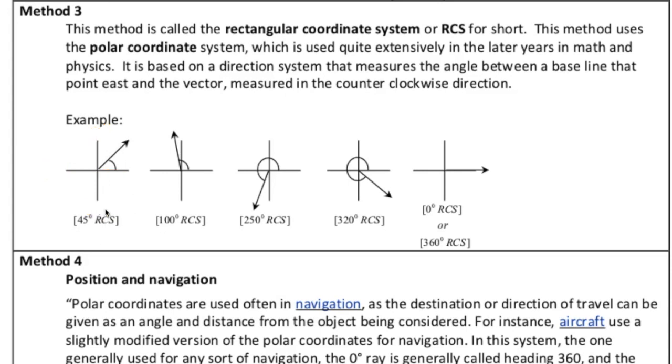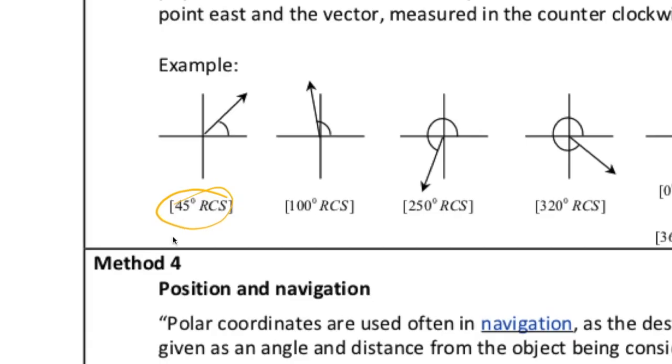Let's take a look at our first example. 45 degrees RCS would be in compass directions east 45 degrees north. The second example, 100 degrees RCS. Well, here we have to do a little bit of math. If that's 90 degrees, that means that little remaining bit has to be 10 degrees. So, that would be north 10 degrees west.